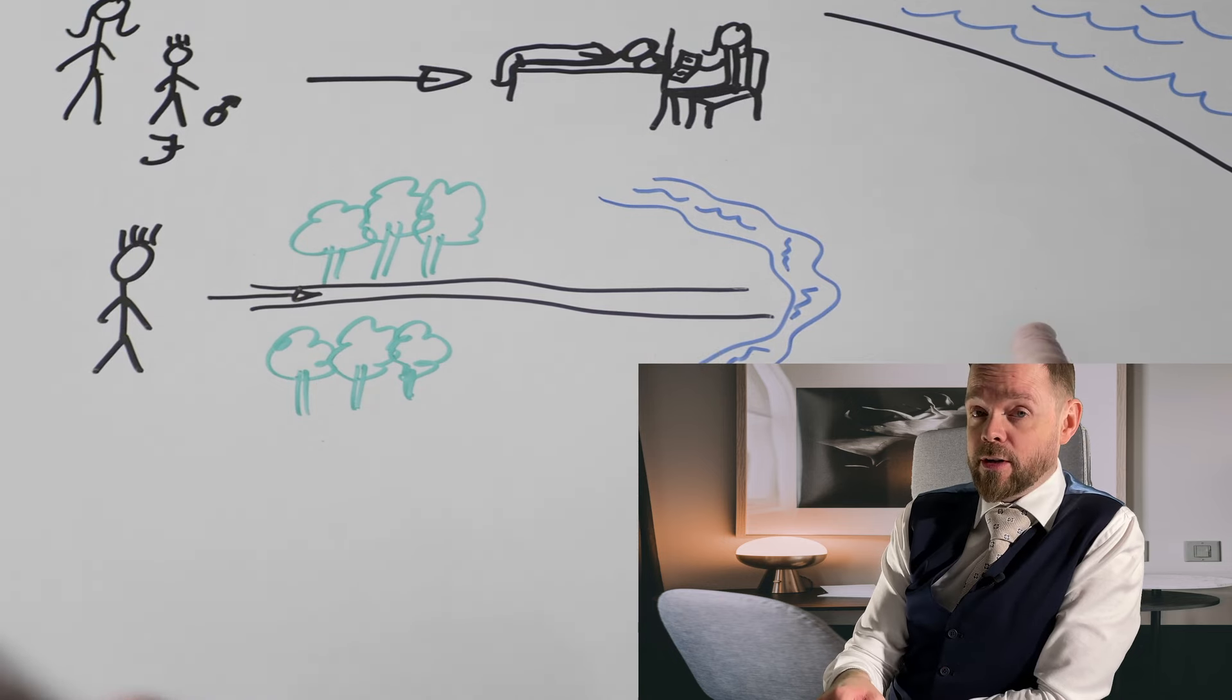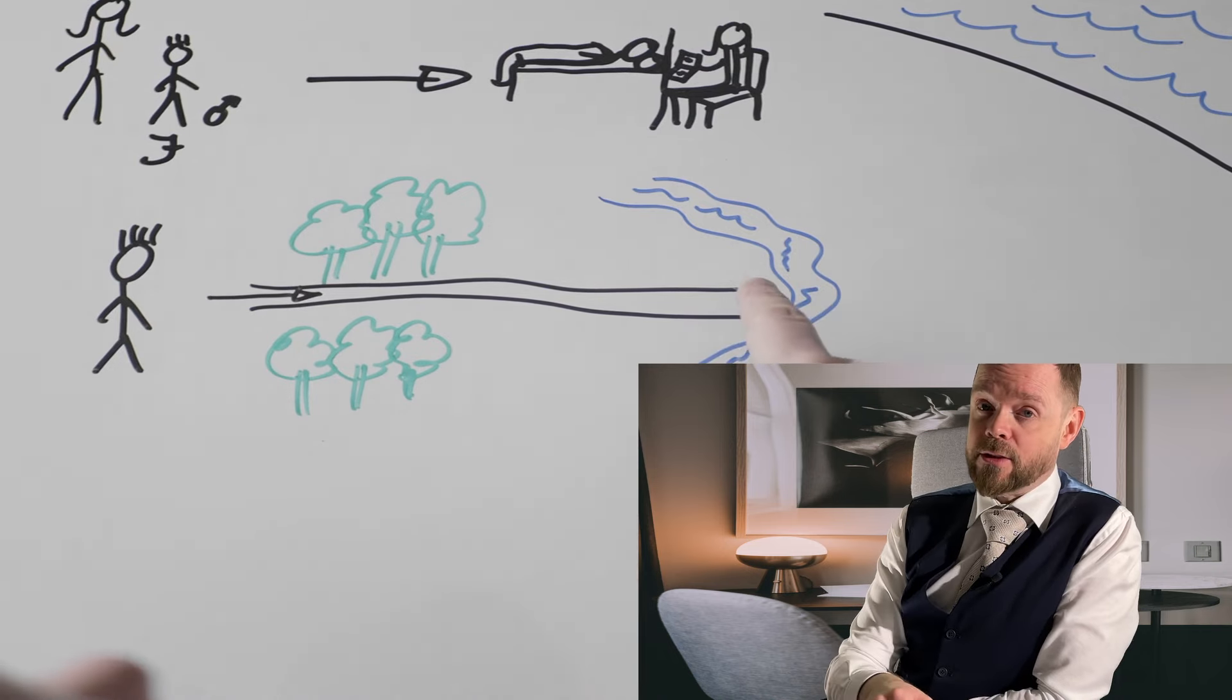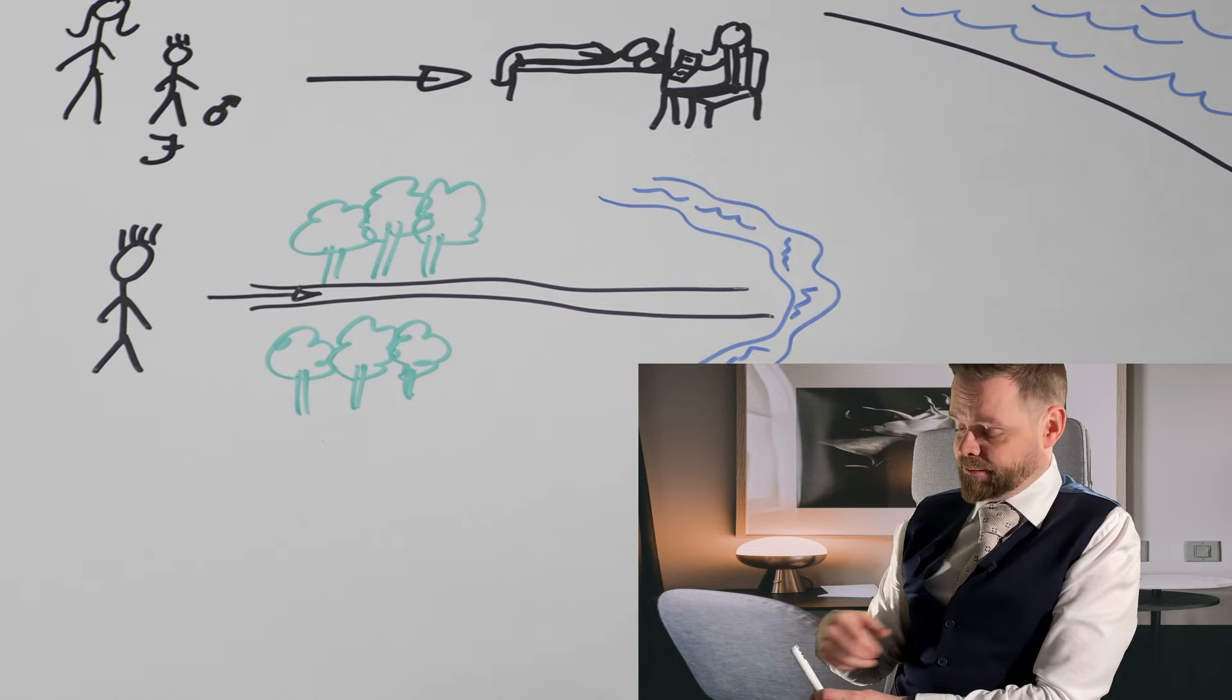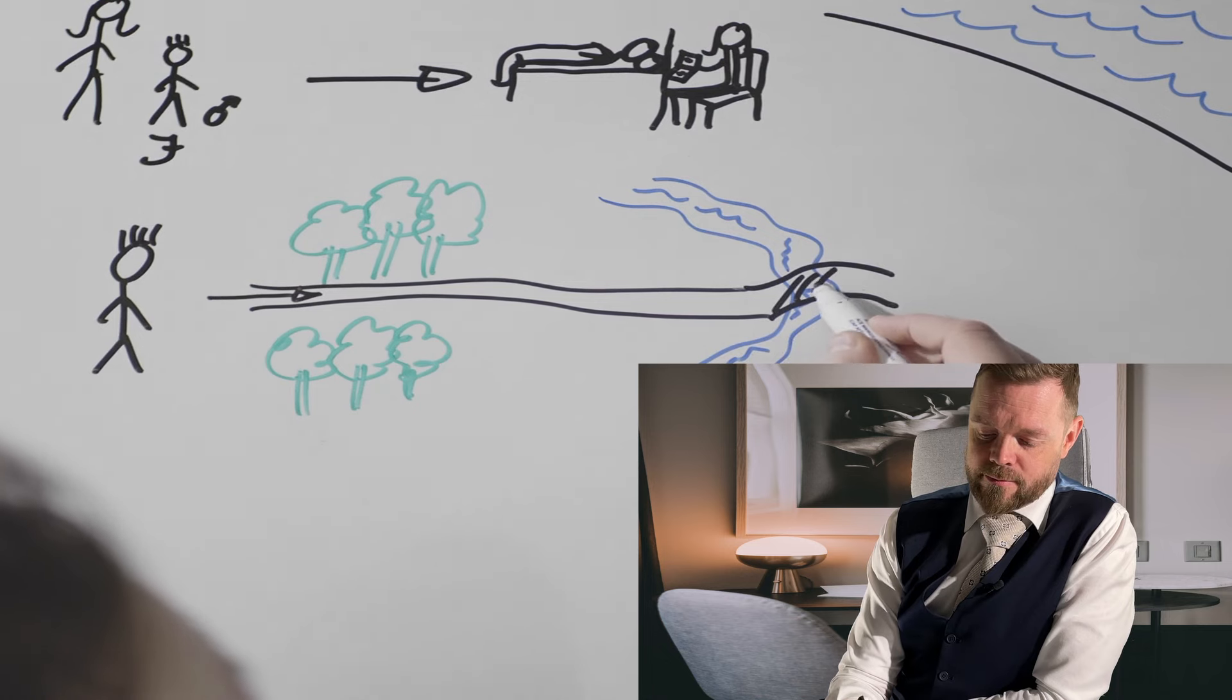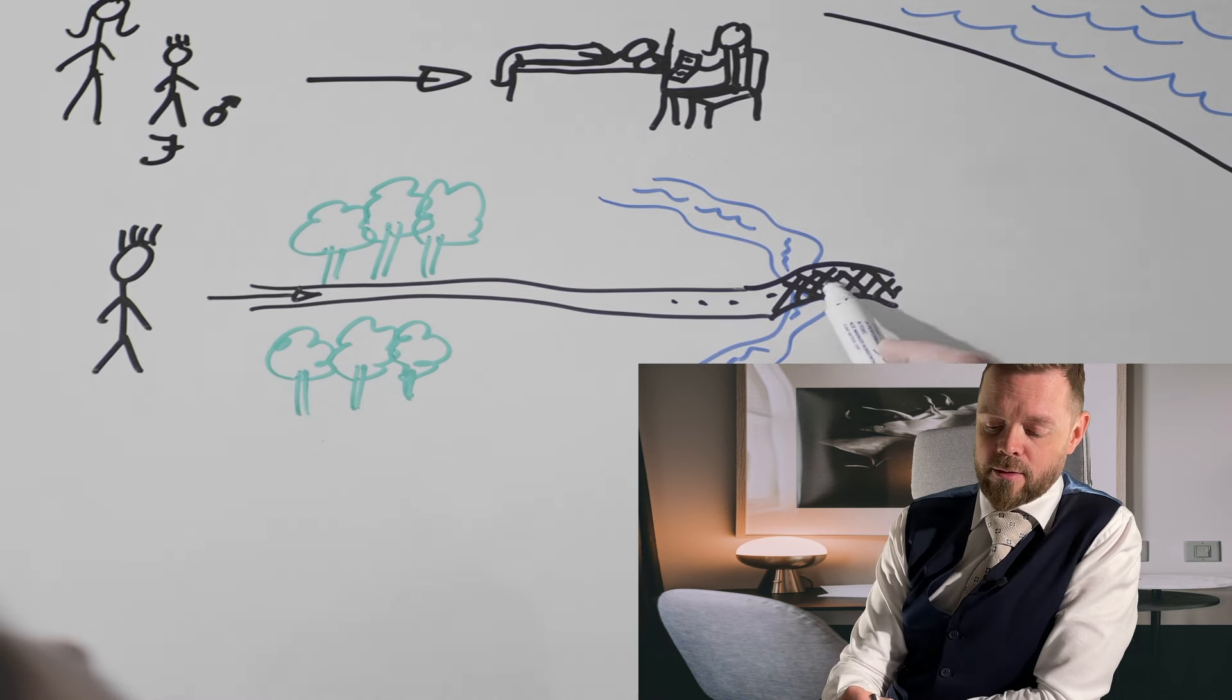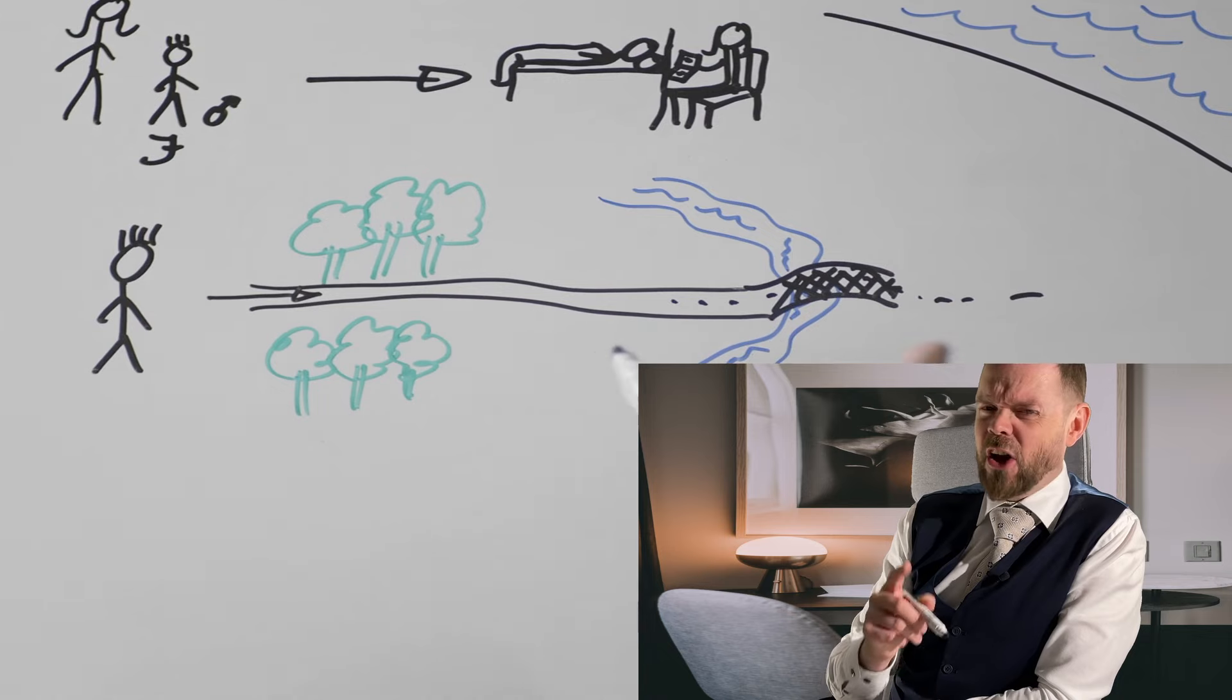First, he had to go over a river. This is a river. It has a lot of water. Luckily there was a bridge. Johnny could walk over the bridge, over the water, not under.